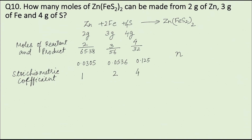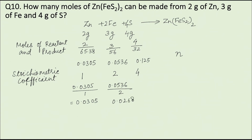Dividing the number of moles of each reactant by their stoichiometric coefficient: for zinc, 0.0305 / 1 = 0.0305; for iron, 0.0536 / 2 = 0.0268; and for sulfur, 0.125 / 4 = 0.0312.